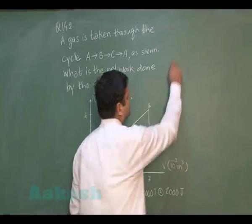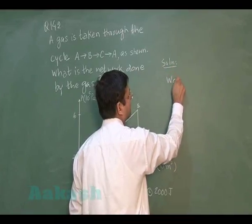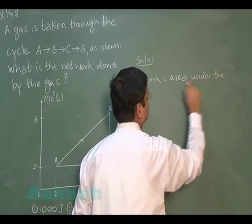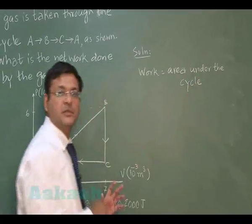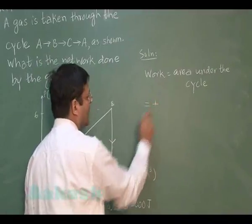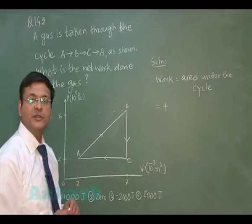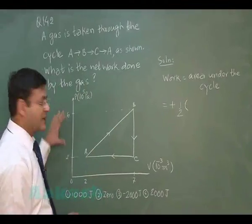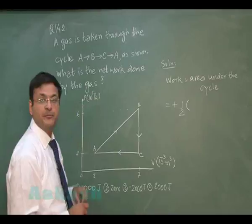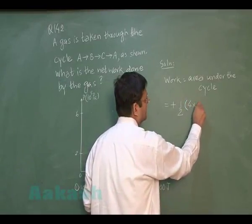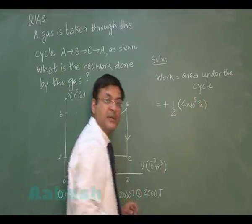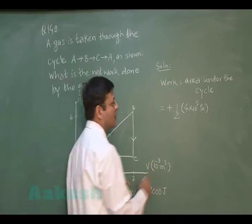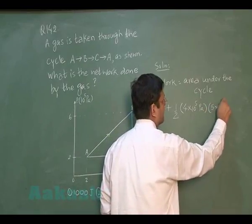The work done equals the area under the cycle. Since it is a clockwise cycle, work done is positive. The cyclic process is in the form of a triangle, so work done = half × perpendicular × base. The perpendicular is 6 minus 2, that is 4 × 10⁵ Pascal, and the base is 7 minus 2, that is 5 × 10⁻³ meter cube.